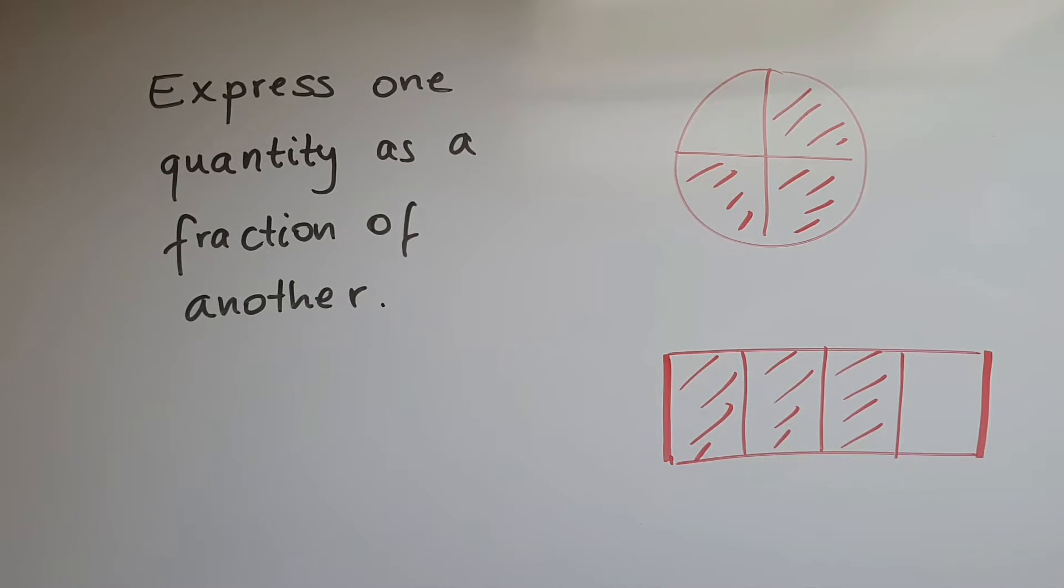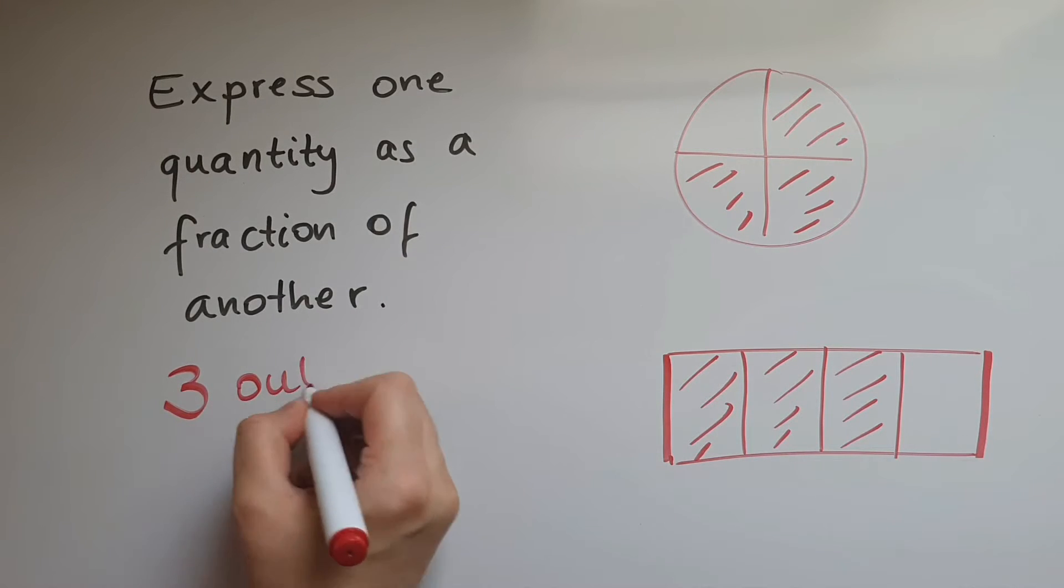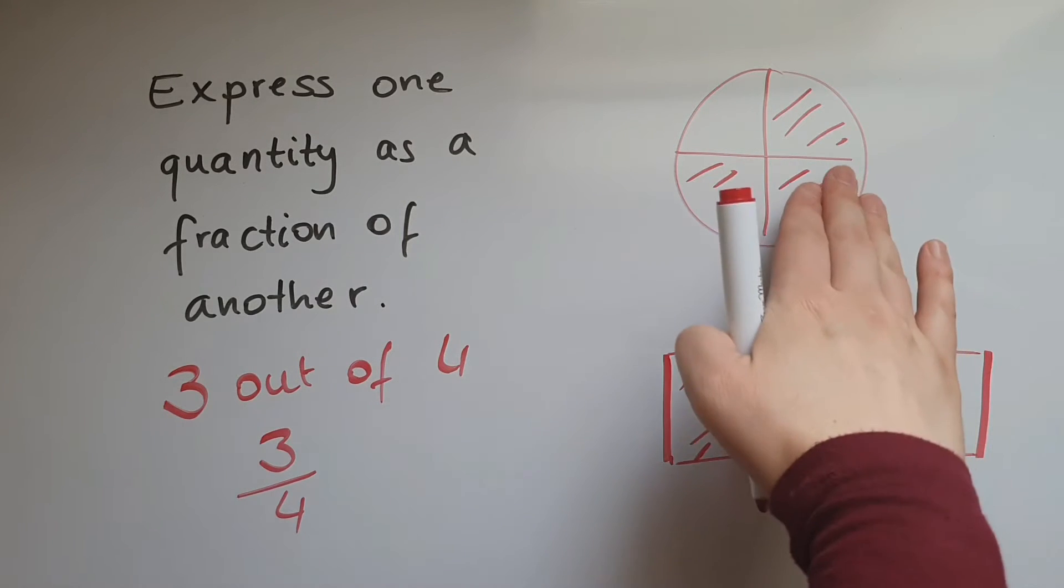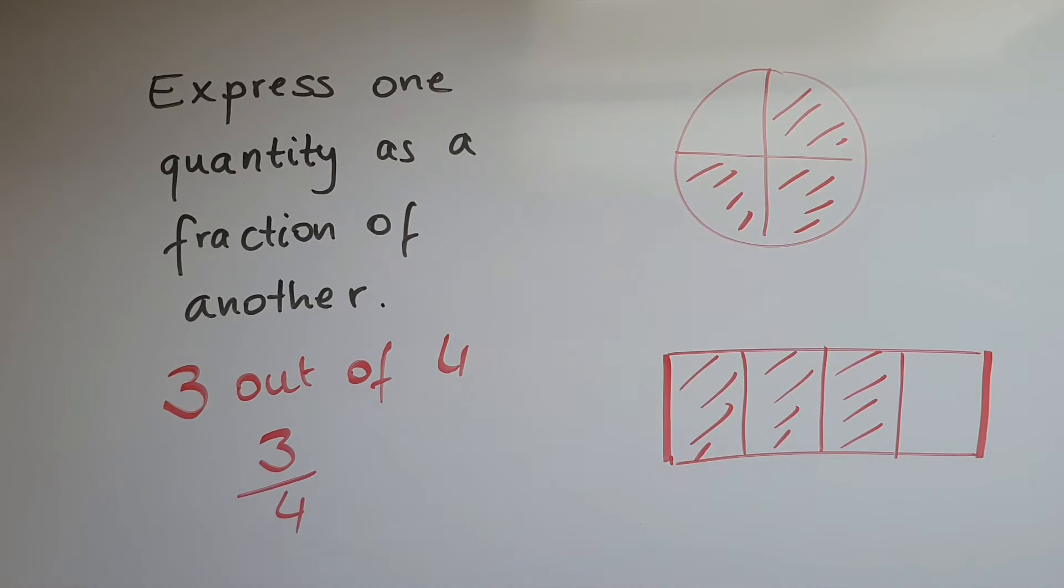In this video we learn to express one quantity as a fraction of another. So if we're asked to express 3 as a fraction of 4, all we're going to do is 3 out of 4, which we write as 3/4. That's represented here and here, so that means 3 out of the 4 possible. Let's have a look at another example.